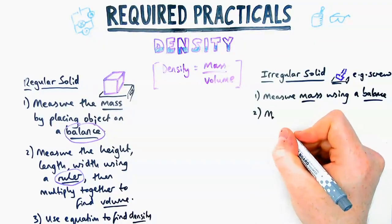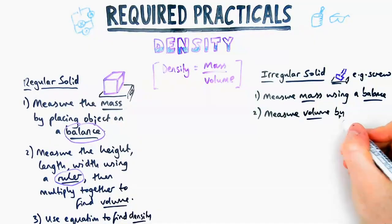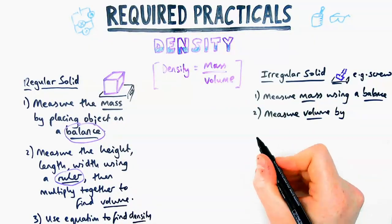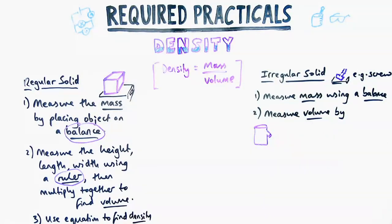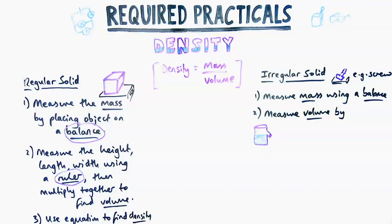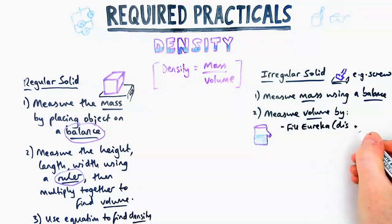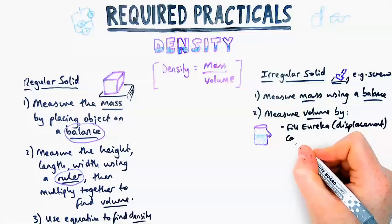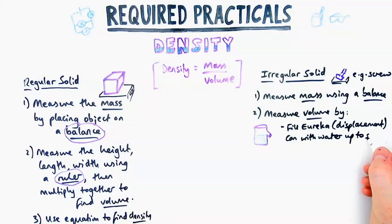To measure the volume is trickier. There are a couple of sub-steps here. We can't measure the length, width, and height because it's not a regular shaped object, so we're going to use one of these. This is called either a displacement can or a Eureka can.